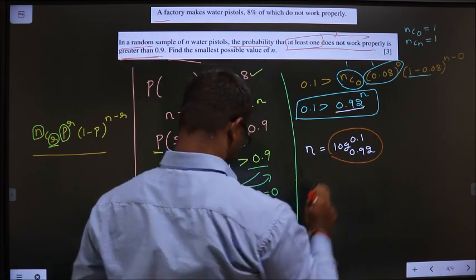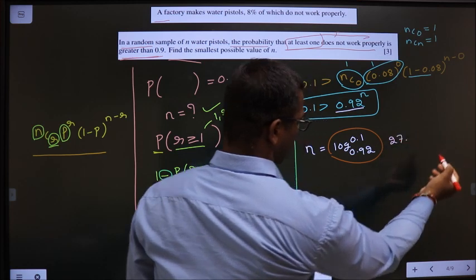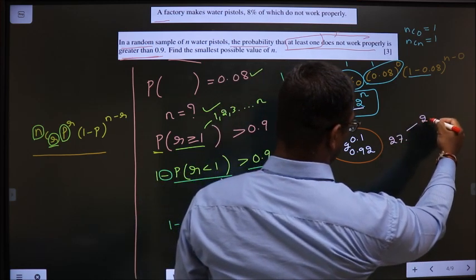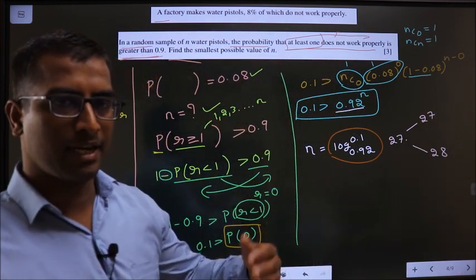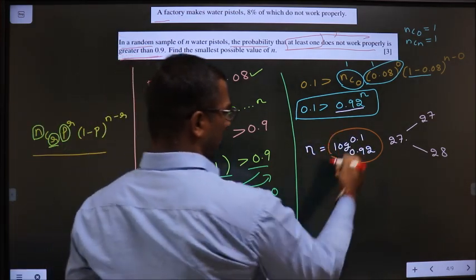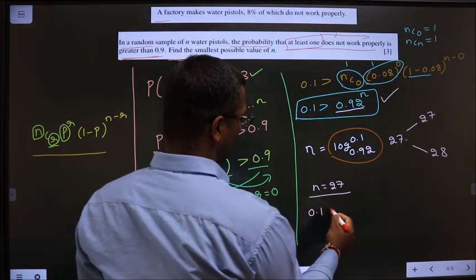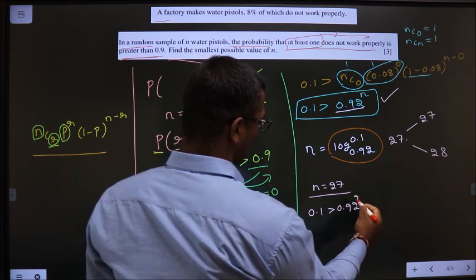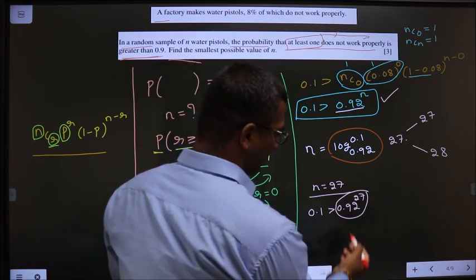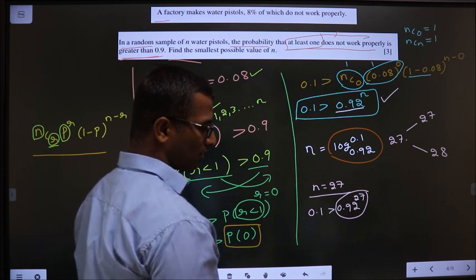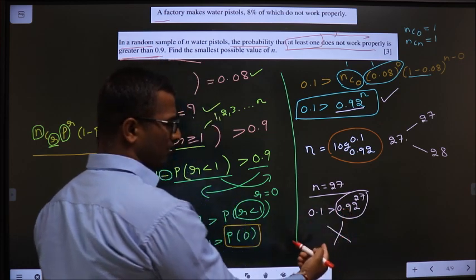Put this in the calculator. How much do you get? You get around 27 points, some change you will get. So now you need to decide is n value 27 or 28 is what you need to decide. And how do you decide that? Replace n equal to 27 in this inequality. So I should check 0.1 greater than 0.92 power 27. You put this in the calculator. And check whether this value is less than 0.1 or not. I didn't get this. This is coming greater than 0.1. So this you rejected.